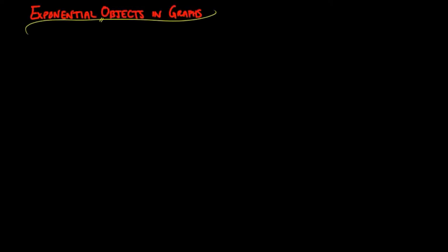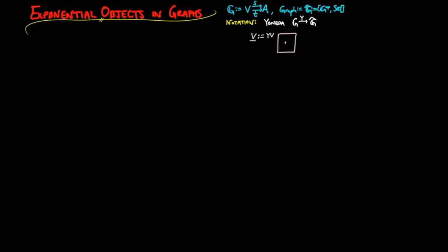Exponential objects in the category of graphs. We will adopt the following notation in this video and in subsequent videos. A representable will be denoted by an underline of the object of representation. In the category of graphs, the Yoneda embedding gives us two morphisms, underline s and underline t, from the representable of the vertex object, underline v, to the representable of the arc object, underline a.